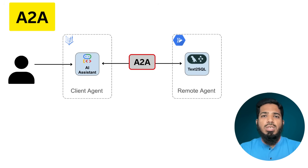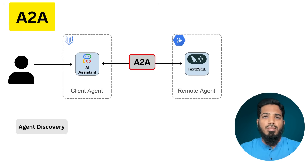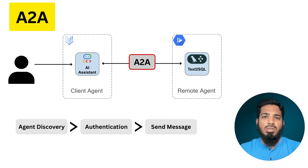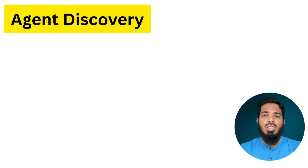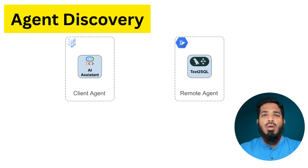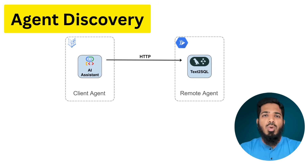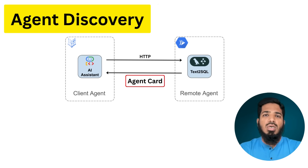The client agent and remote agent will communicate in three steps: first is agent discovery, then authentication, then send message or request. In the first step — agent discovery — the client agent calls a predefined HTTP endpoint on the remote agent, and the remote agent provides a JSON in response. This JSON is called the agent card. The agent card holds all the information that the client agent will need for further communication.